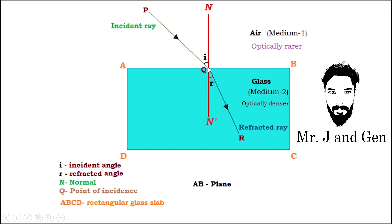Third term: normal. In the diagram, N and N' are indicated with a red line segment — a perpendicular line to the plane AB. The perpendicular line drawn to the surface at the point of incidence is called the normal.